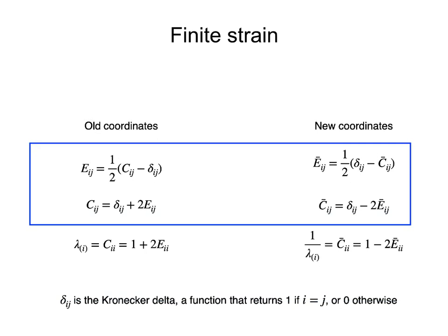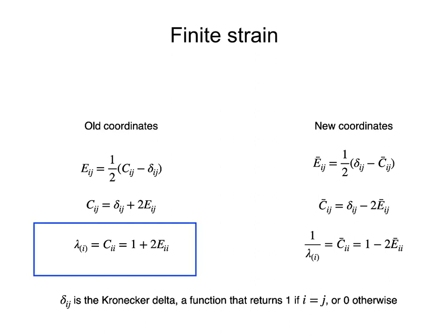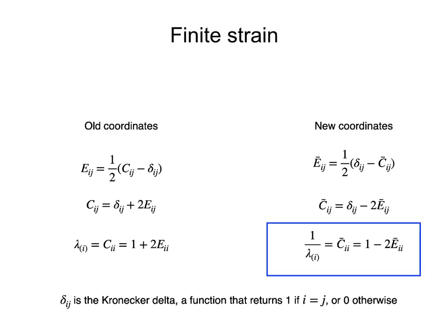Delta_IJ is the Kronecker delta, a function that is 1 if I is equal to J, or 0 otherwise. If the coordinate axes are parallel to the principal axes of these symmetric tensors, the principal quadratic elongations are equal to the diagonal elements of the Green deformation tensor, and also to 1 plus 2 times the diagonal elements of the Lagrangian finite strain tensor. Likewise, the inverse of the principal quadratic elongations are equal to the diagonal elements of the Cauchy deformation tensor, and also to 1 minus 2 times the diagonal elements of the Eulerian strain tensor.